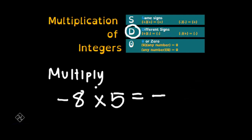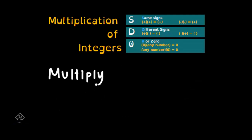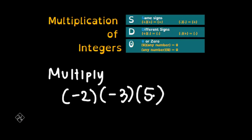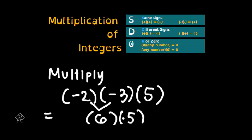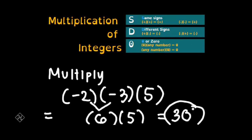The last example: negative two times negative three times positive five. Since we have three terms, we multiply the first two first. Negative two times negative three — both are negative integers, so they have the same sign, giving positive six. Next, we multiply the result by the remaining term: six times positive five. Since they also have the same sign, the answer is positive. Six times five equals positive 30, and that is our final answer.